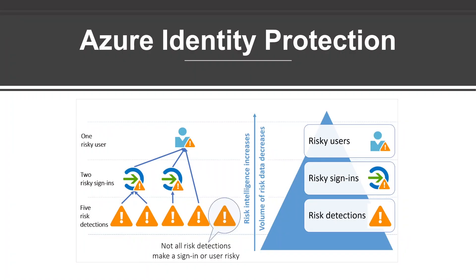Azure Identity Protection is a tool that allows organizations to accomplish three key tasks. The first task is to automate the detection and remediation of identity-based risk. The second task is to investigate risk using data in the portal. And the third main task is to export risk detection data to third-party utilities for further analysis.